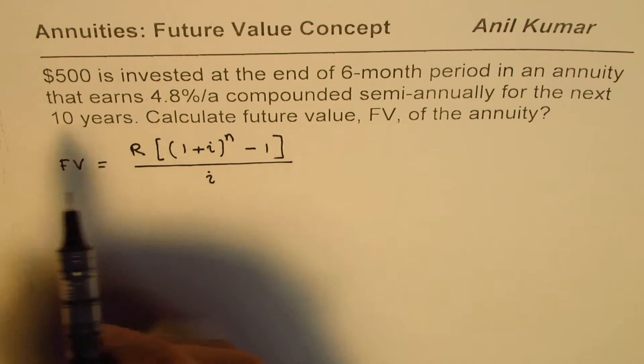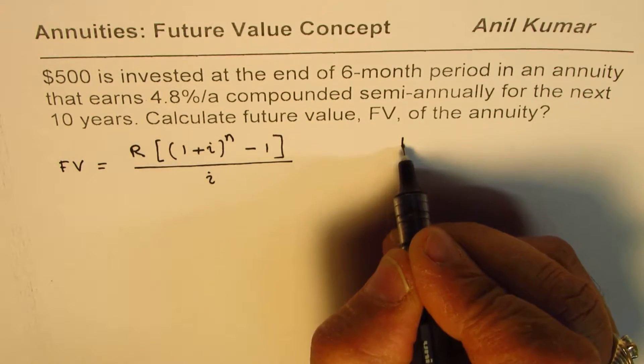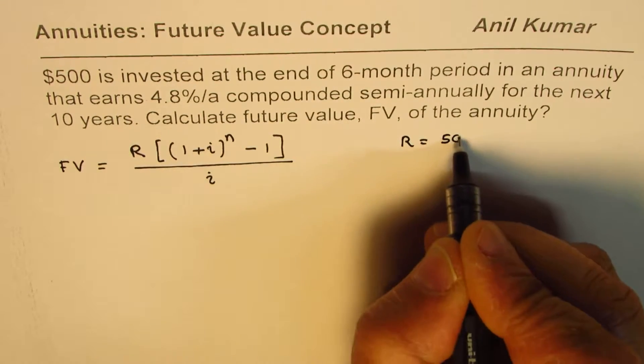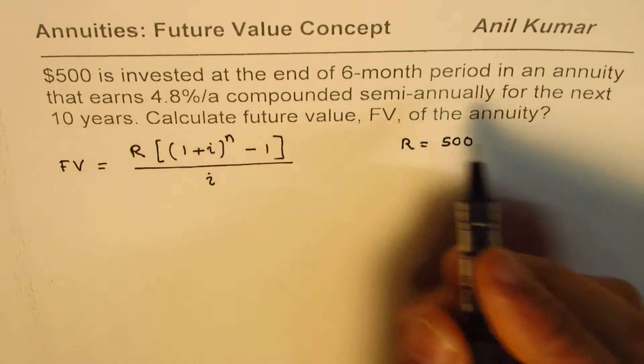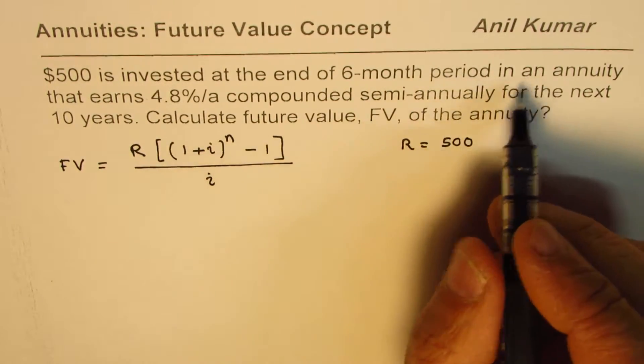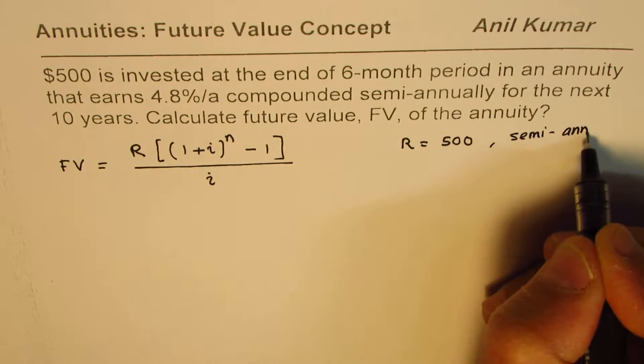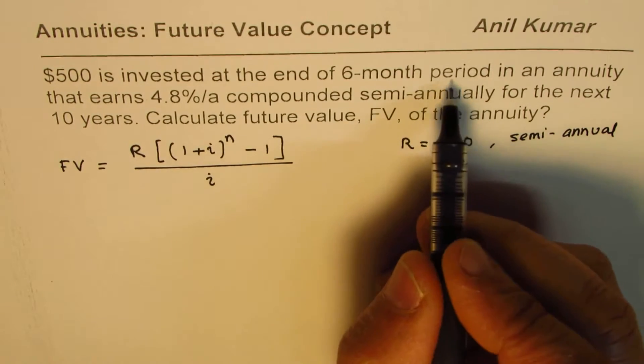In the given situation, we are given $500 is invested at the end of six months, that means R equals $500. Six months is the compounding period, so it is semi-annual - that's the period.